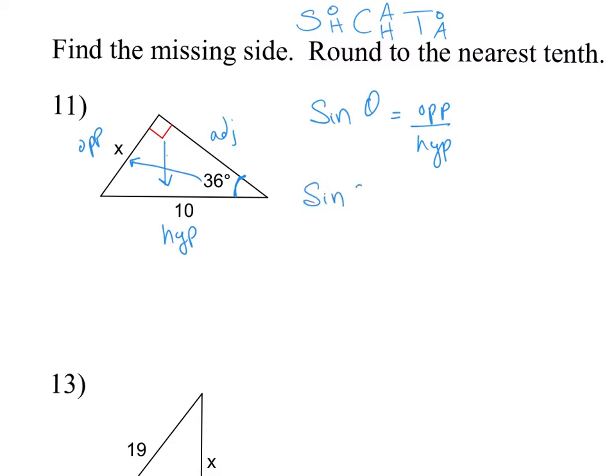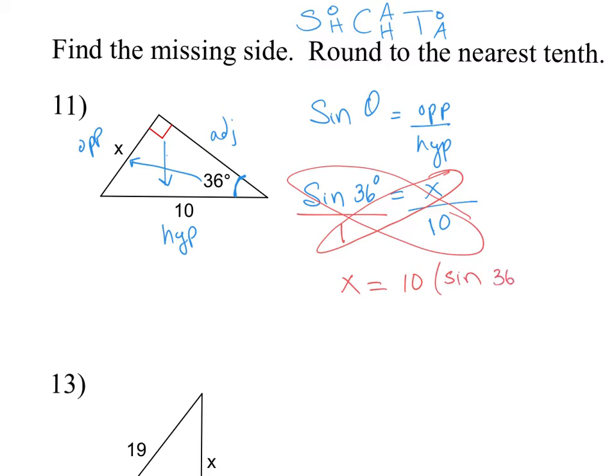So I fill in my information from my image. Remember, theta represents our angle. My opposite side is what I'm solving for. And my hypotenuse has a value of 10. Now, what I'm going to do next is put the sine of 36 degrees over 1 to create a fraction. By doing this, what I have created is a proportion, two fractions that are equal to each other. And we can solve proportions by cross-multiplying. So I'm going to do x times 1 and then 10 times the sine of 36 degrees. So I get x equals 10 times the sine of 36 degrees.